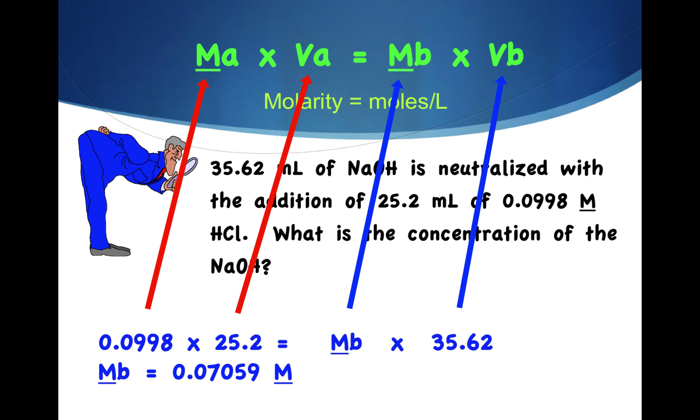Molarity of acid, 0.0998, times the volume of the acid, 25.2, is equal to the unknown molarity of the base, MB, that's our unknown, times the volume of the base. When we calculate, we wind up with a molarity of 0.07059 molar sodium hydroxide. Titration is an important procedure used to determine the molarity of an unknown.